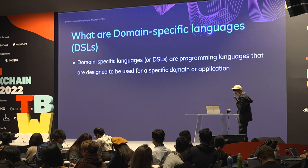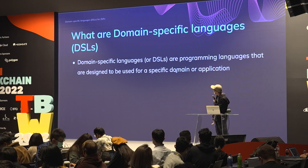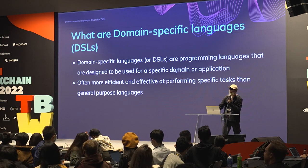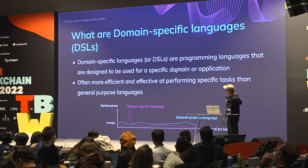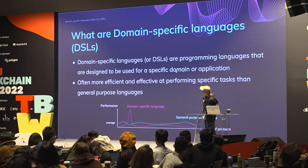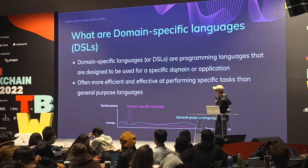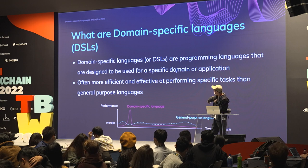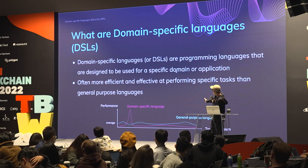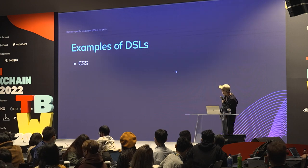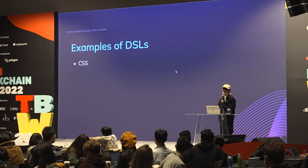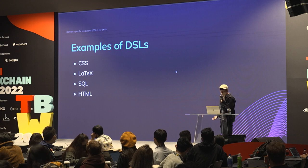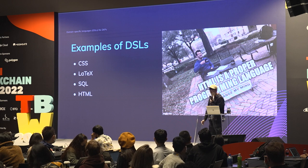Domain specific languages, or DSLs, are programming languages designed for a specific domain or application. They're often really good at performing a specific task compared to general purpose languages. The blue line represents general purpose languages — usable for all kinds of problems but not particularly great at any. The red spike represents DSLs — solving only specific problems but very well. Examples include CSS, LaTeX, SQL, and HTML.